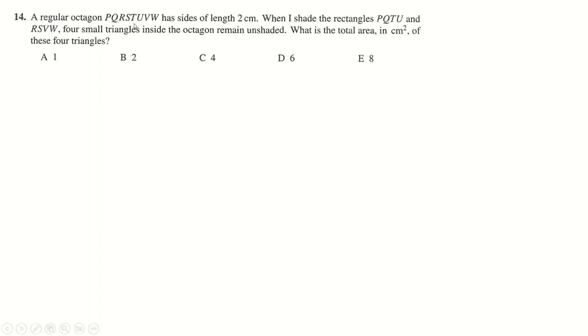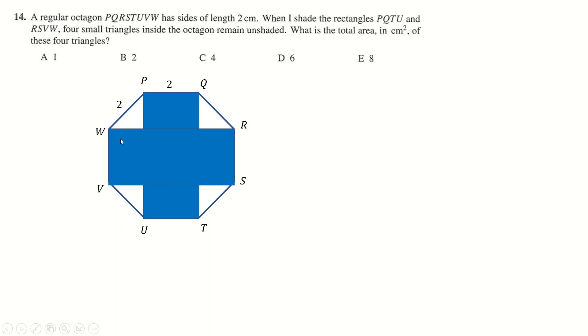Question number 14. Regular octagon, so I'll draw it out, has side length 2. It's regular, so all the sides are 2. Shade the rectangle that and that. Four small triangles remain. What's the area of the four? Well, again, just memorize your interior angles of polygons. The interior angle of an octagon is 135. Which means if you draw a rectangle like this, the spare angle here is 45. So this is an isosceles triangle because this is also 45.